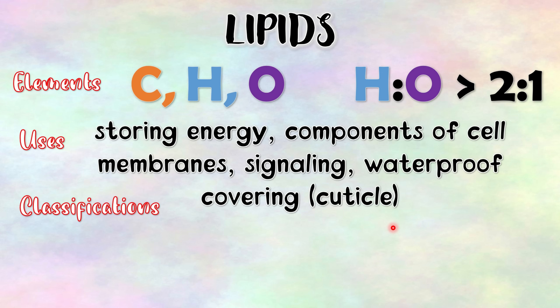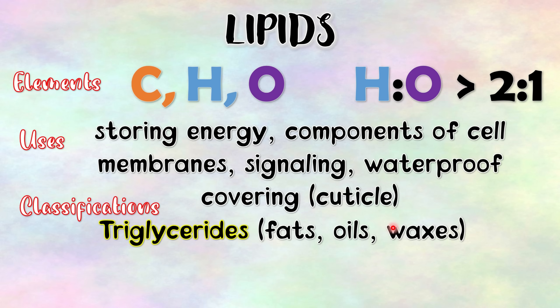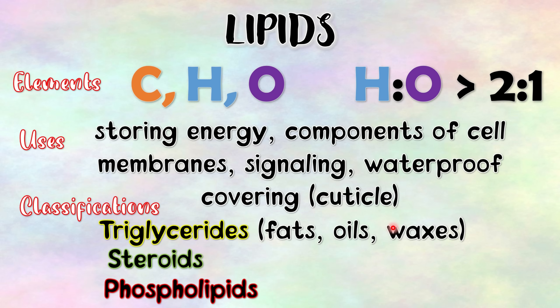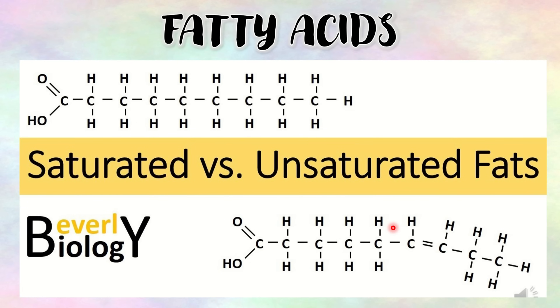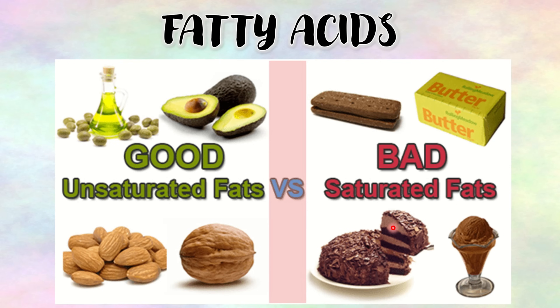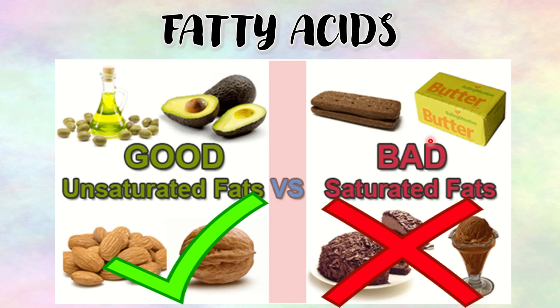The three major groups of lipids are: triglycerides, which includes fats, oil, and wax; steroids; and phospholipids. Fatty acids can be either saturated or unsaturated. A fatty acid that has a single bond only is called a saturated fatty acid. Unsaturated fatty acids have one or more double bonds. In most human health situations, the consumption of unsaturated fats is preferred over saturated fats.